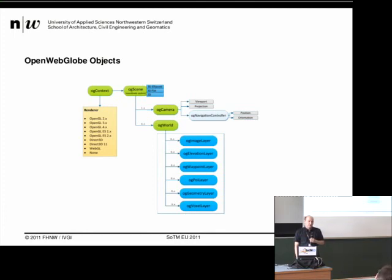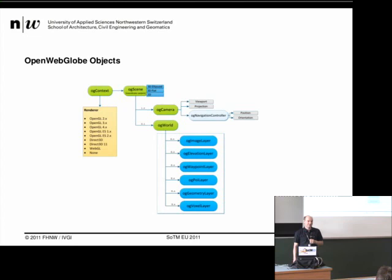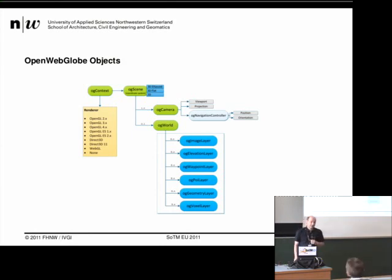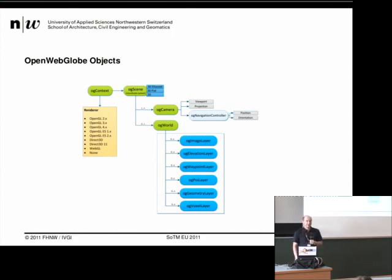This virtual globe is object-oriented but with functions. We have around 300 functions in total encapsulated in objects. The most important object is the context object — it's actually the render engine. For example, OpenGL 2, 3, 4.x, or OpenGL ES render context, or Direct3D if you like Windows, though Direct3D is not currently supported. Or, of course, the WebGL context.